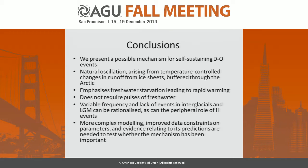In conclusion, we present a possible mechanism for self-sustaining Dansgaard-Oeschger events: a natural oscillation arising from temperature-controlled changes in runoff from ice sheets, buffered through the Arctic. It particularly emphasizes freshwater starvation leading to the rapid warming. Unlike most mechanisms, it doesn't require pulses of freshwater — which is helpful since we don't seem to find evidence of all these freshwater pulses. Variable frequency and the lack of events in interglacials and very cold periods can be rationalized, as can the peripheral role of Heinrich events. We throw this model on the table for a good kicking — more complex modeling, better parameter constraints, and evidence from the Arctic are needed to test it.